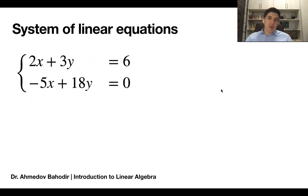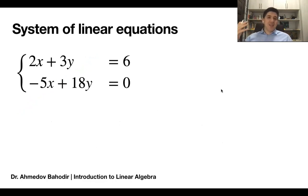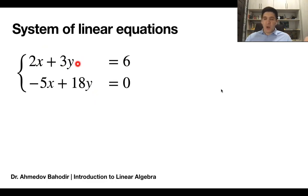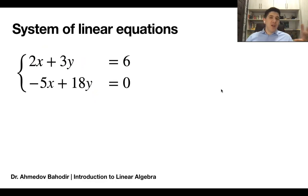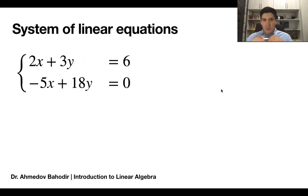The next central topic we're going to talk about throughout this course is the system of linear equations. A system of linear equations is a bunch of linear equations with some number of variables — for example, two variables x and y — where one pair of numbers for x and y, or one vector of numbers for all variables, satisfies all of the equations at the same time. That is why it is called a system of linear equations: there should be one solution for all of the linear equations.